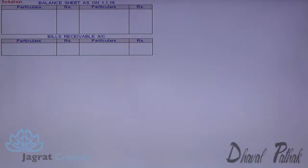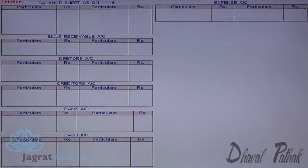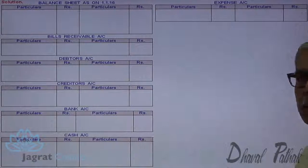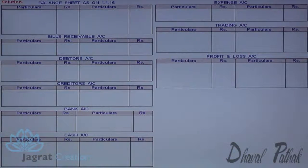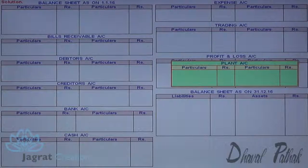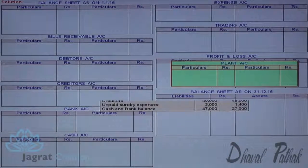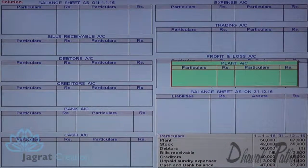The various accounts prepared are: opening balance sheet, bills receivable, debtors, creditors, bank account, cash account — prepared separately — expense account, trading account, profit and loss account, and balance sheet. I am given the opening balances. The first is the plant account — plant goes to the opening balance sheet asset side, and the debit side of the respective account shows opening balance.